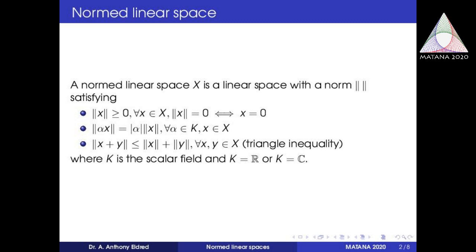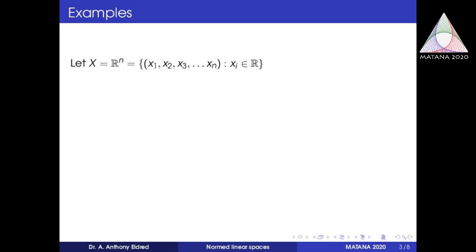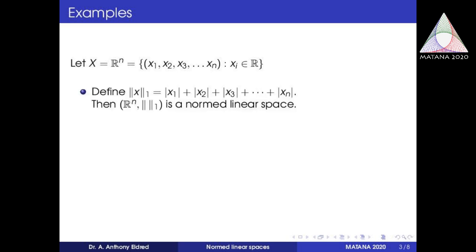First we will see some examples. Let X equal to R^n — the set of all n-tuples (x1, x2, up to xn) where each xi belongs to R. We define a norm on R^n called the 1-norm: the 1-norm of x equals modulus of x1 plus modulus of x2 plus up to modulus of xn, i.e., the summation of the modulus of each coordinate. Then R^n is a normed linear space with this 1-norm, satisfying the conditions of a vector space with usual addition and scalar multiplication.